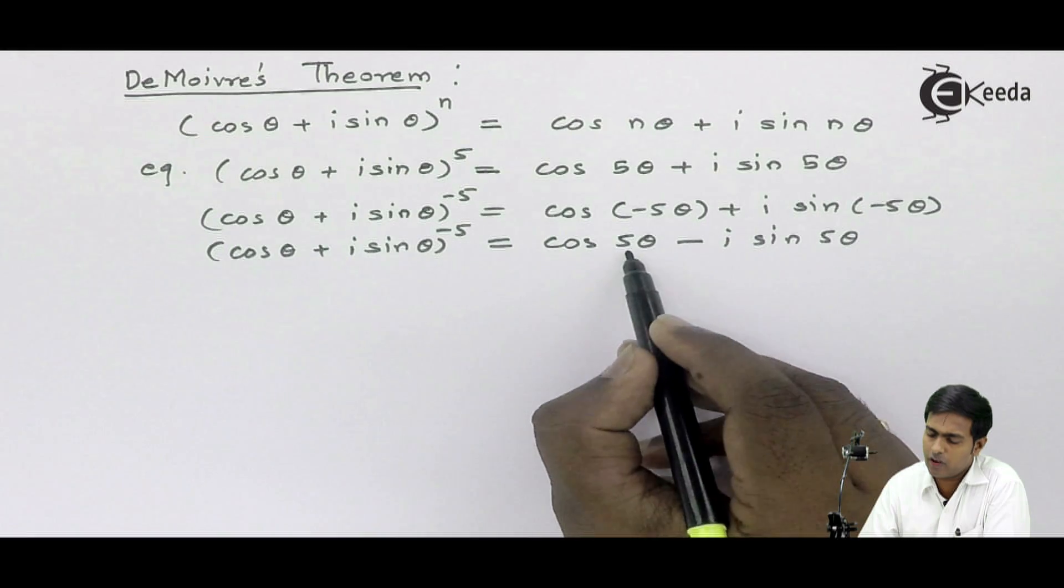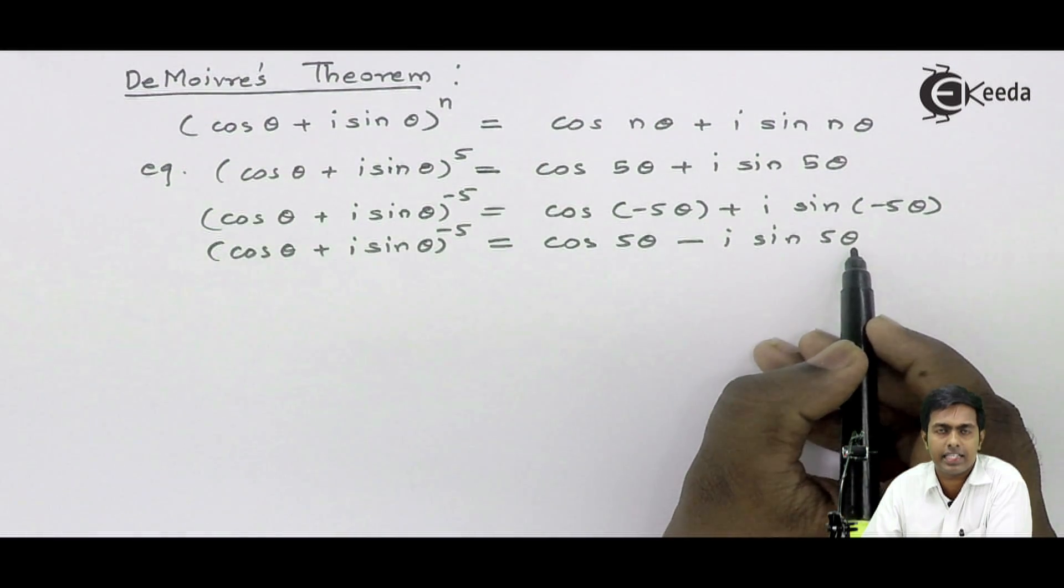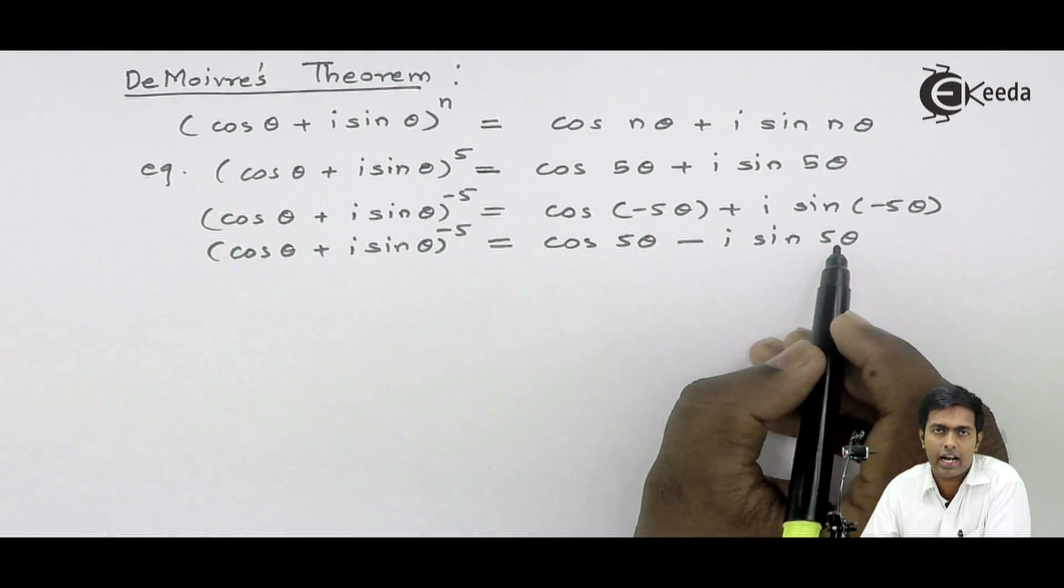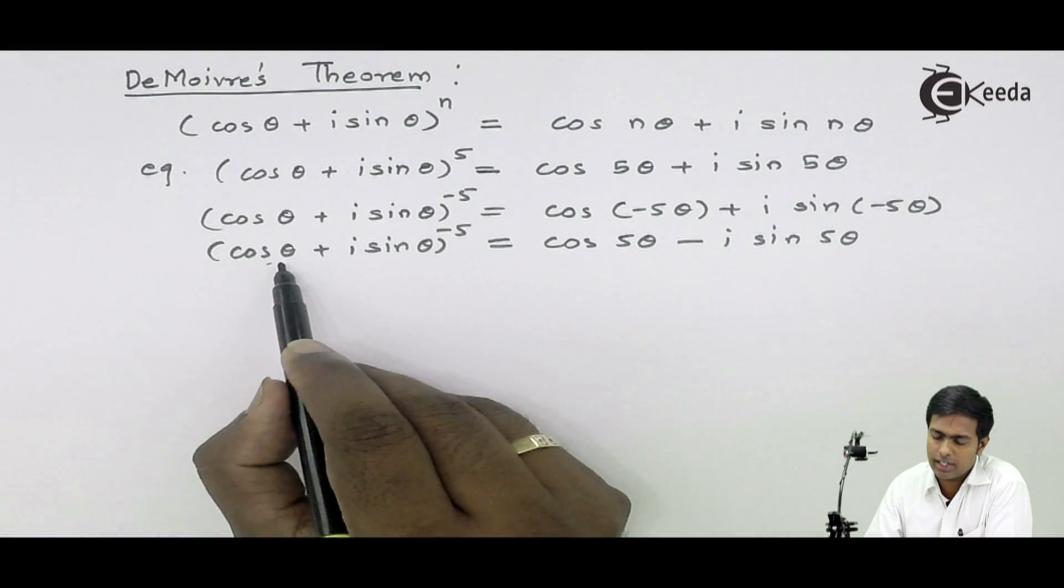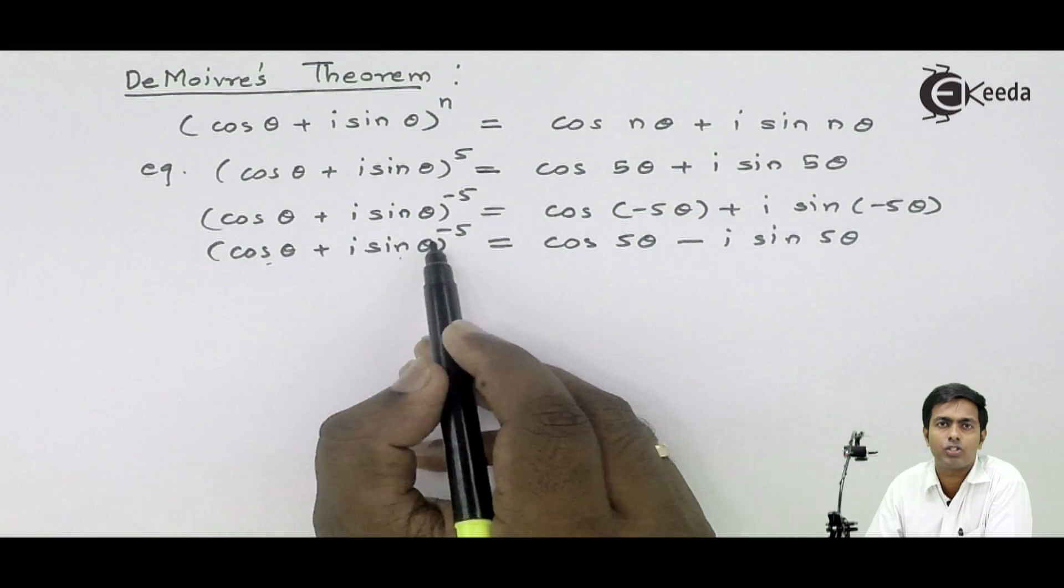It means if (cos φθ - i sin φθ) is given to you, then you can write it down as (cos θ + i sin θ) raised to -φ.